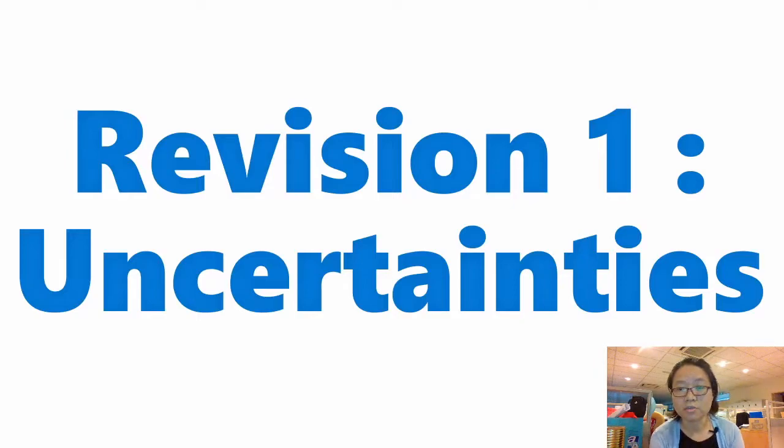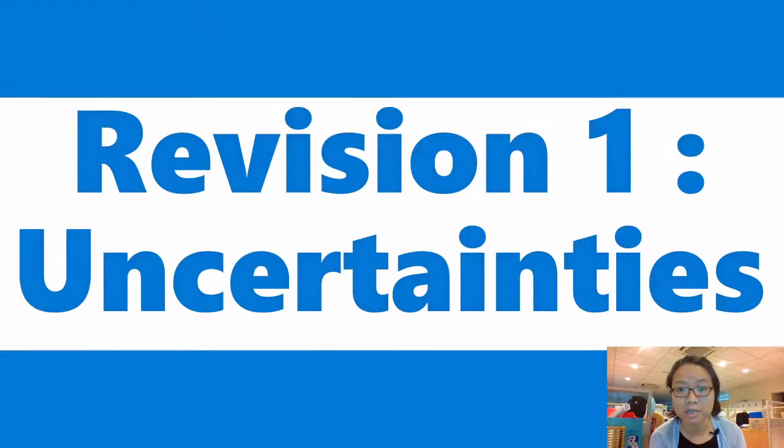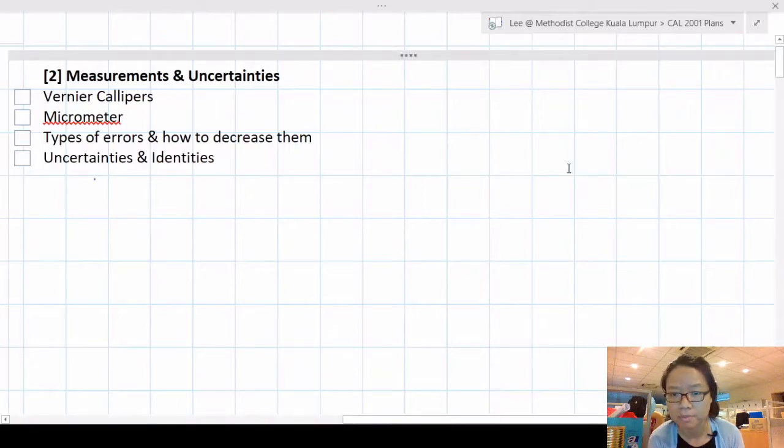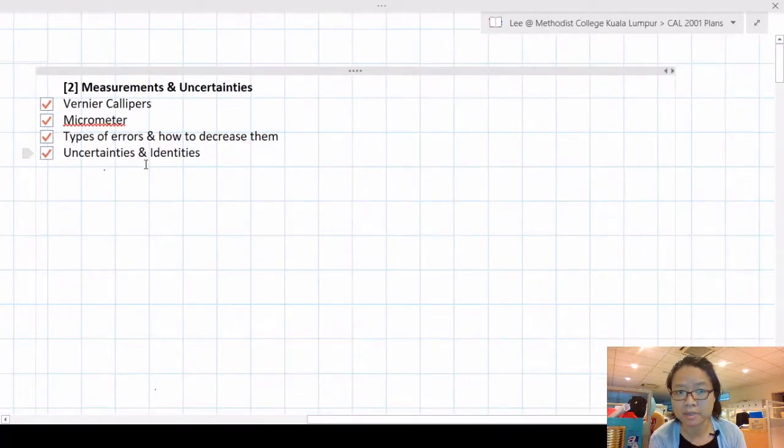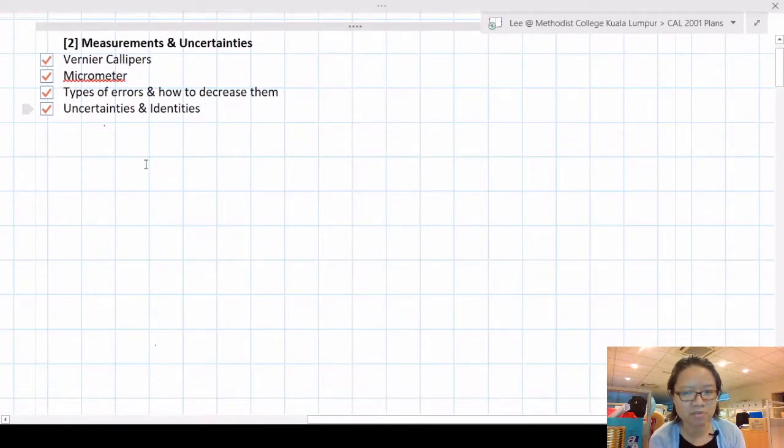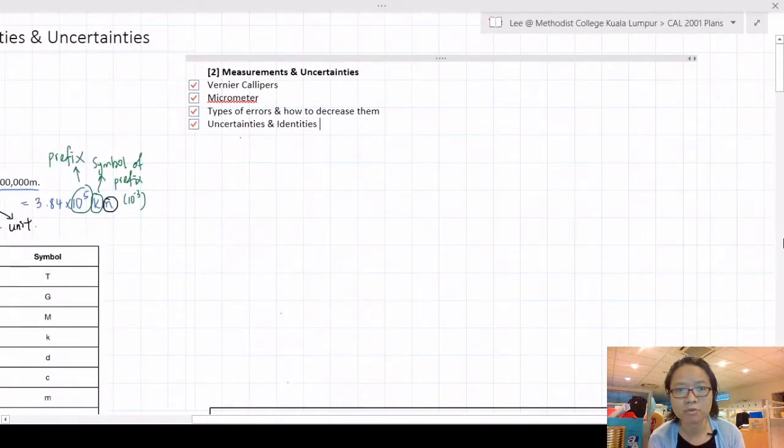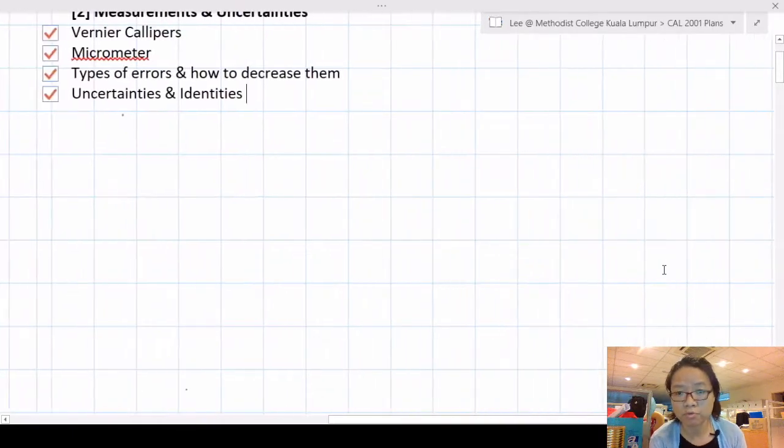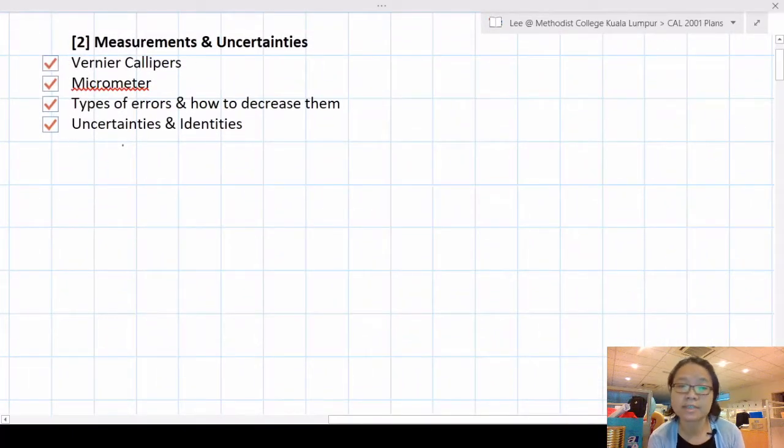Okay, in this video we will do a brief revision on uncertainties. I will focus mainly on the identities and not the actual measuring technique that you need for paper three. You should know how to read vernier calipers and micrometers, the types of errors (systematic and random), and how to decrease them. We're also going to focus on the uncertainties and identities.